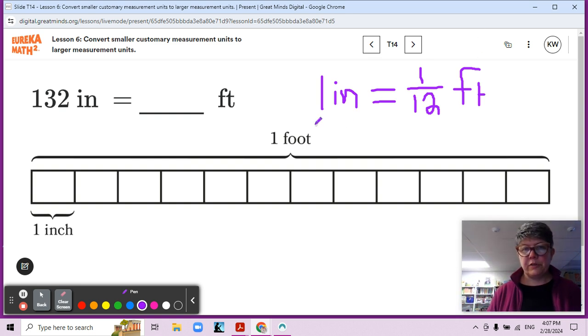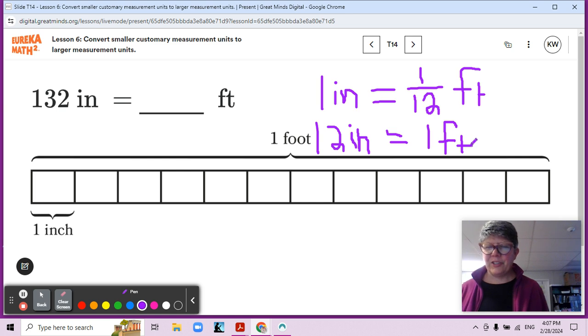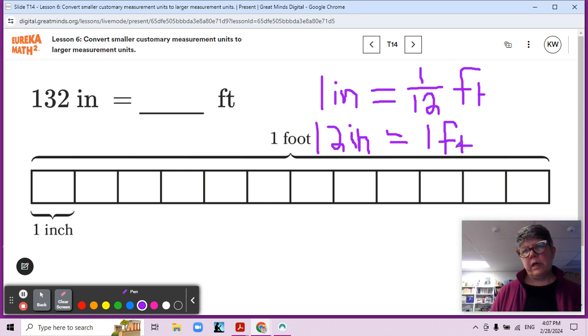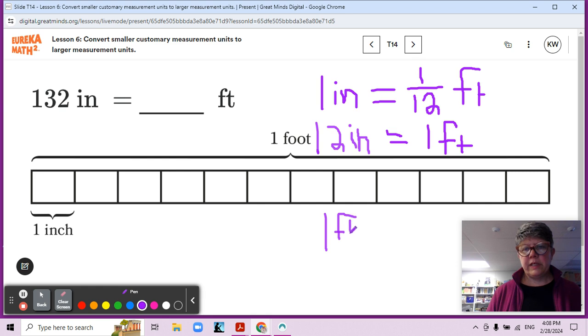Also 12 inches is equal to one foot. So what do we notice about these two equations here? They're showing equal lengths. Yes. I should have it switched around though, so that we have, right. This should be here. Let's fix that really quick. Why am I fixing it? Is it going to erase? Okay. I'll just rewrite it down here. One foot. One foot is equal to 12 inches.